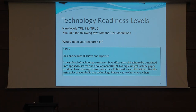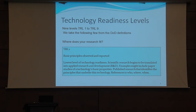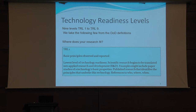TRL level one is the lowest level of technological readiness — scientific research begins to be translated into applied research and development. Examples include studies of a technology's basic properties and published research that identifies the principles underlying the technologies. In some sense, if you're doing theoretical crypto, you should be doing TRL level zero. That's not being negative — it's saying that if it's theoretical, it shouldn't be ready for deployment. By definition, theoretical crypto is TRL level zero.